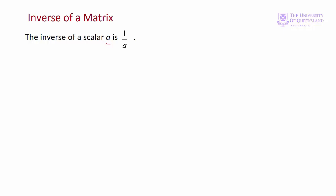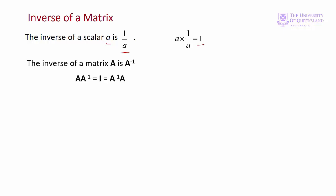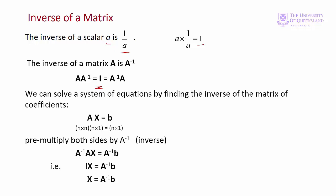The inverse of a matrix is analogous to the inverse or reciprocal of a scalar. For a scalar A, the reciprocal is 1 over A, and multiplying A by 1 over A gives 1. Similarly, the inverse of a matrix is A to the minus 1, and if we multiply a matrix by its inverse we get the identity matrix. Having the inverse of the matrix of coefficients allows us to find the solution to a set of simultaneous equations.